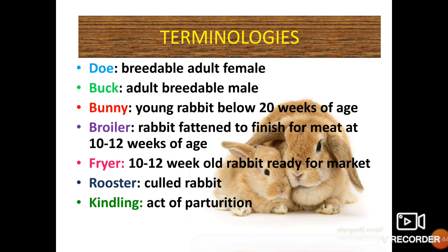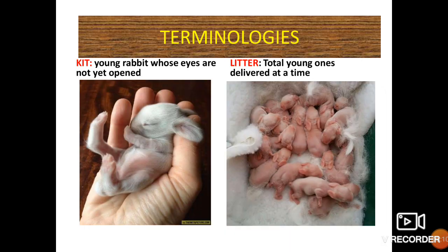Here are some terminologies related to rabbits. A doe is a breedable adult female. Buck is a breedable adult male. Bunny is a young one below 20 weeks of age. A broiler is a rabbit fattened for meat at 10-12 weeks of age. Fryer is a 10-12 week old rabbit ready for market. Roaster is a culled rabbit. Kindling is the act of parturition. Kit is a young one whose eyes are not yet opened. And litter is the total number of young ones delivered at a time.